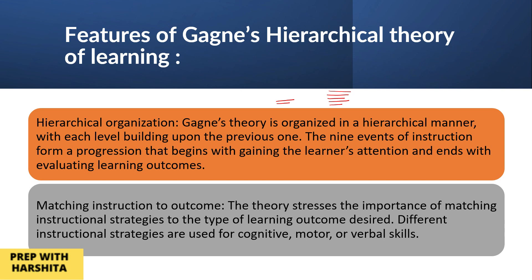Matching instruction to outcome: the theory stresses the importance of matching instructional strategies to the type of learning outcome desired. Different instructional strategies are used for cognitive, motor, or verbal skills. If you want a certain outcome, you need to match the instructions to it — if you don't match the instructions, there is no advantage to those instructions.